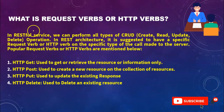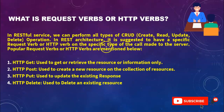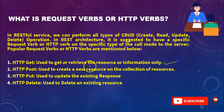Next question: what are request verbs or HTTP verbs? In a RESTful service we can perform all types of CRUD operations, which are Create, Read, Update, and Delete. In REST architecture it is suggested to have a specific HTTP verb for each type of call. The popular request verbs are GET, POST, PUT, DELETE, and also PATCH. GET is used to retrieve resource information; POST is used to create a new resource; PUT is used to update an existing resource; DELETE is used to delete an existing resource.